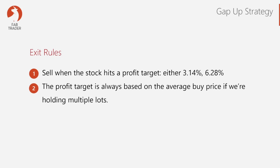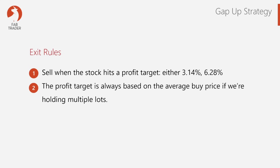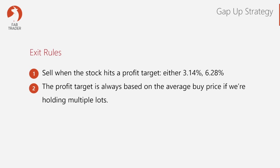In case you have more than one open position for the same stock — which can happen, since the same stock could satisfy the entry conditions again on another gap-up day — you can buy the same stock one more time and have multiple positions open simultaneously. In that case, the profit target is always based on the average buy price.